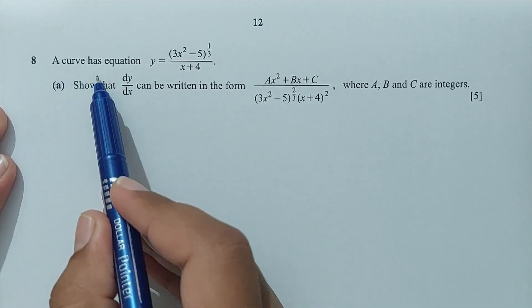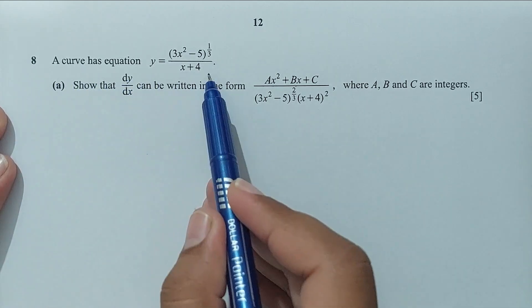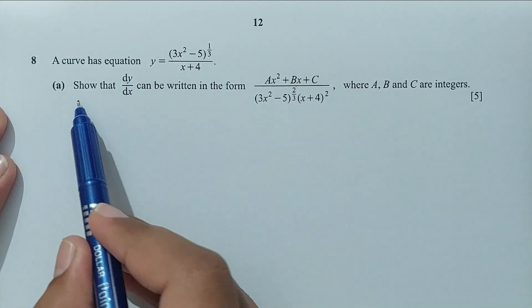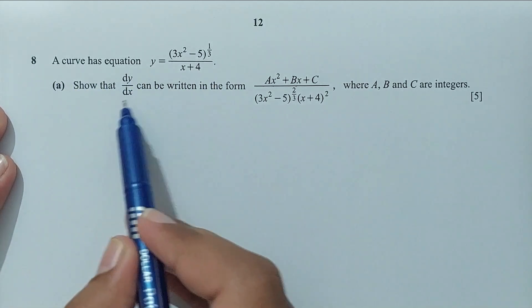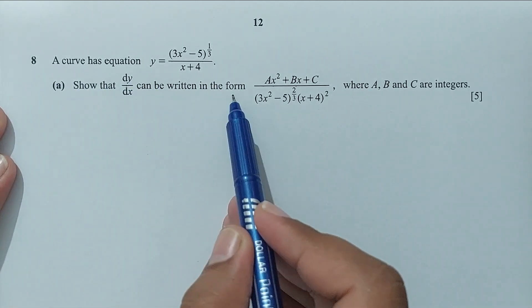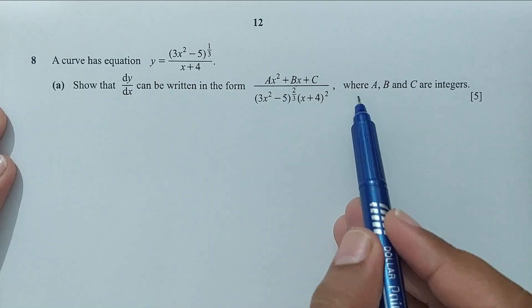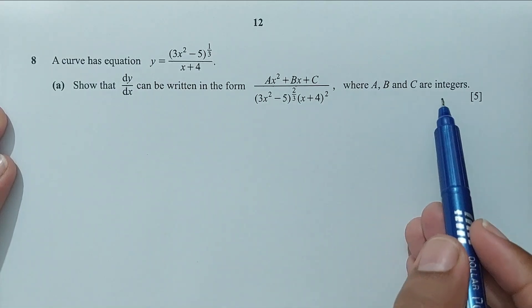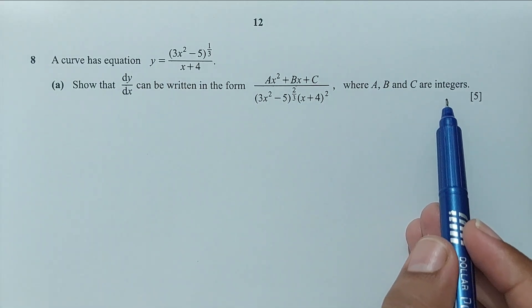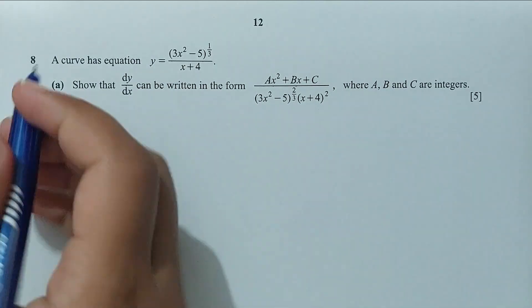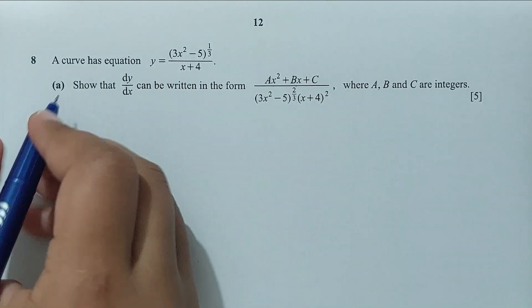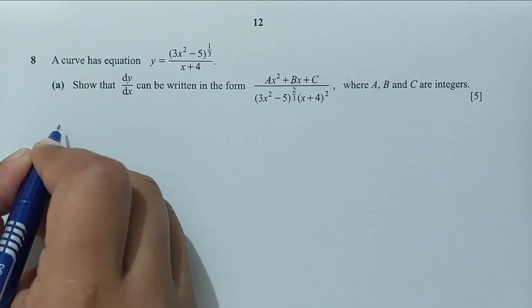Question number 8. A curve has this equation. Part A showed that dy/dx can be written in the form where a, b, c are integers. Let me find out the derivative.